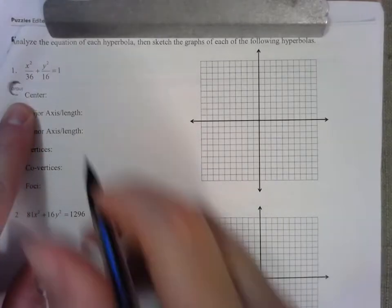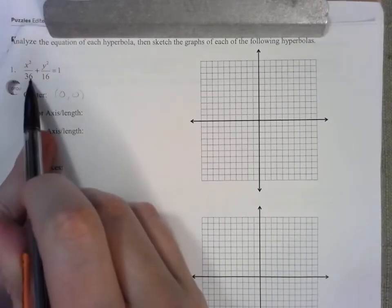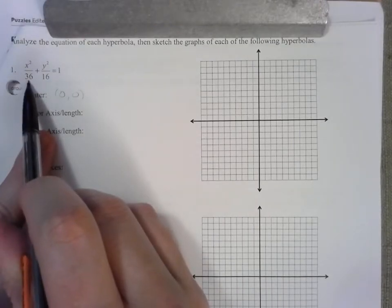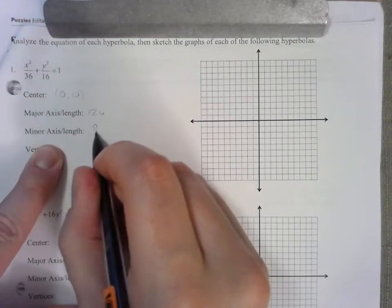Question one, do you understand that the center is (0,0)? Hopefully by now you know that there's no shifts. The major axis would go left and right, 6 right and 6 left makes 12 units. The minor axis, 4 up, 4 down, would be 8 units.